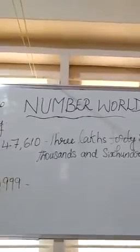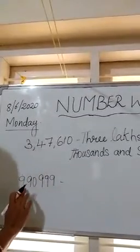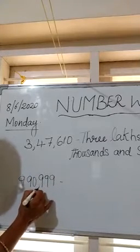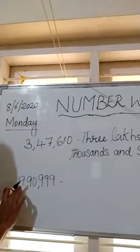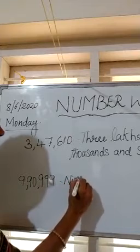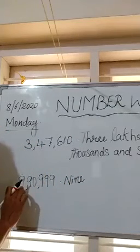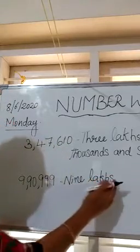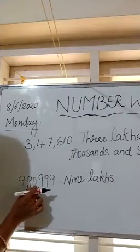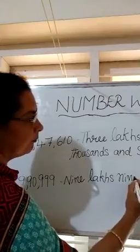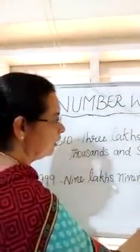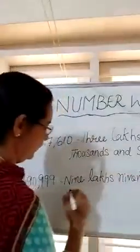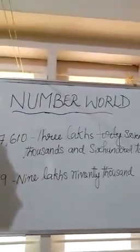Here is another number — 9,90,999. Let me group it: 3 digits, comma; 2 digits, comma; last group has 1 digit — 9. The group name is lakhs, so 9 lakhs. Then the next group is 90, in the thousands group — ninety thousand. Then the last group is 999. So the number name is nine lakhs ninety thousand nine hundred and ninety-nine.